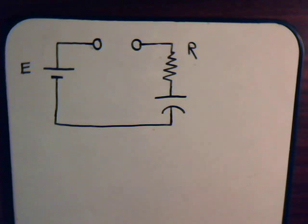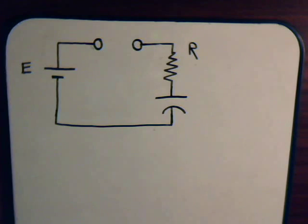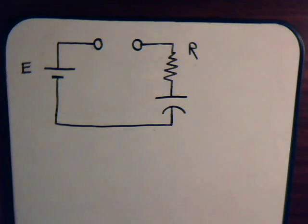This will be video number 61 in our series on electrical circuit analysis. In this video, we're going to consider a very simple circuit. We have a battery, a resistor, and a capacitor all hooked up in series. What we're going to do is consider how to find an equation that tells us the amount of charge on the capacitor at any time.